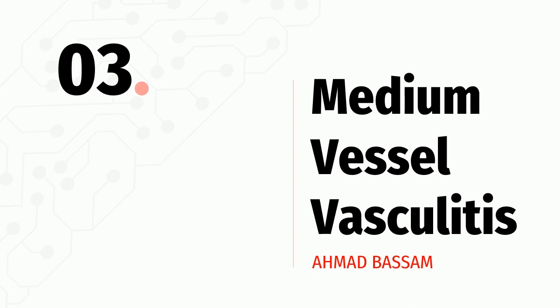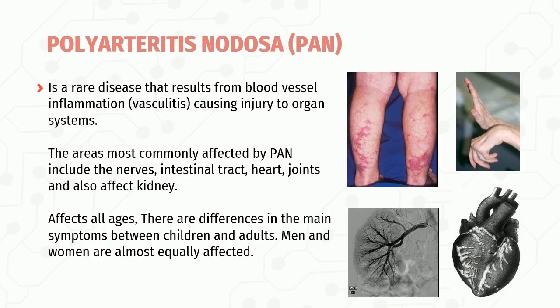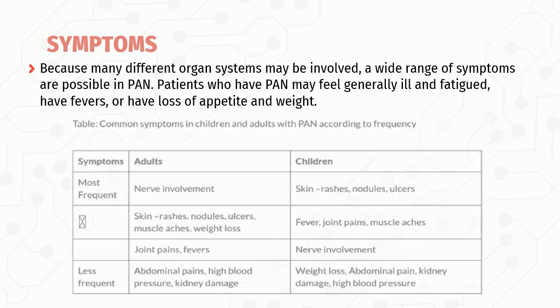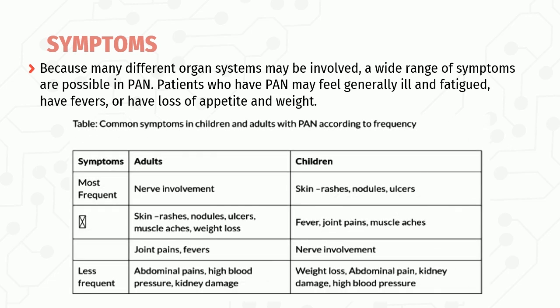Medium vessel vasculitis — starting with polyarteritis nodosa (PAN), a rare disease resulting from blood vessel inflammation causing injury to organ systems. The areas most commonly affected include the nerves, intestinal tract, heart, joints, and kidneys. This disease affects all ages; females and males are almost equally affected. Patients may feel generally ill and fatigued, have fever, or have loss of appetite and weight.